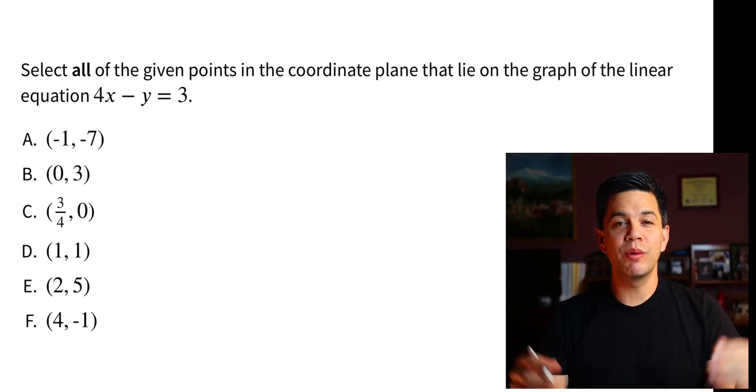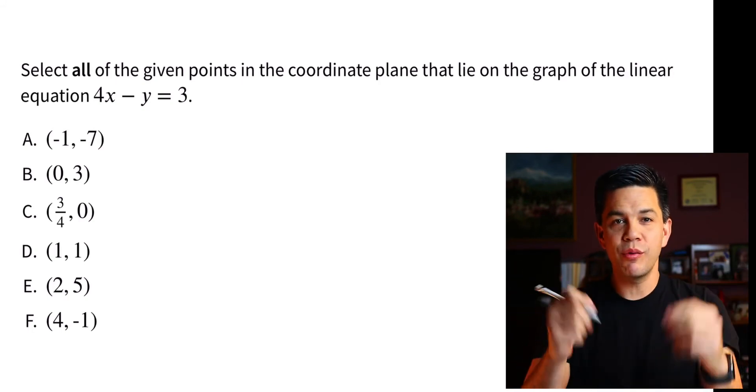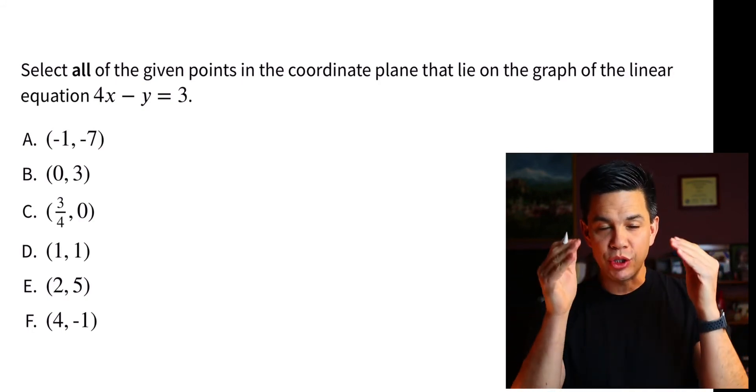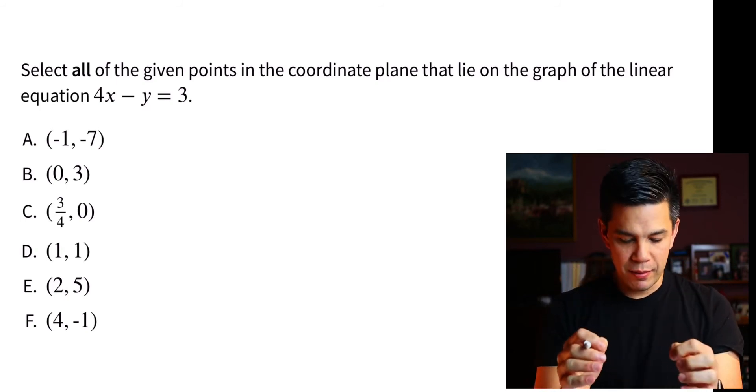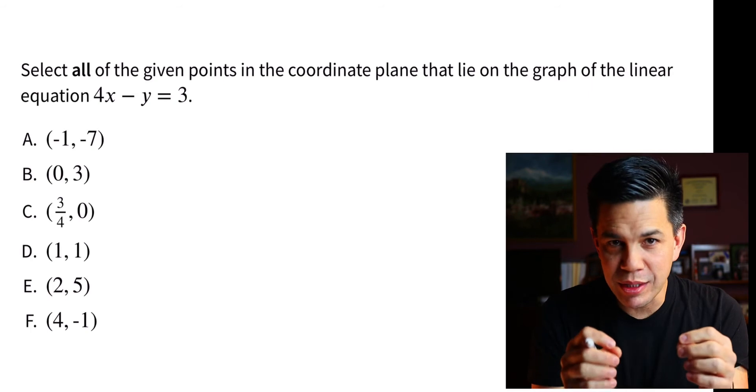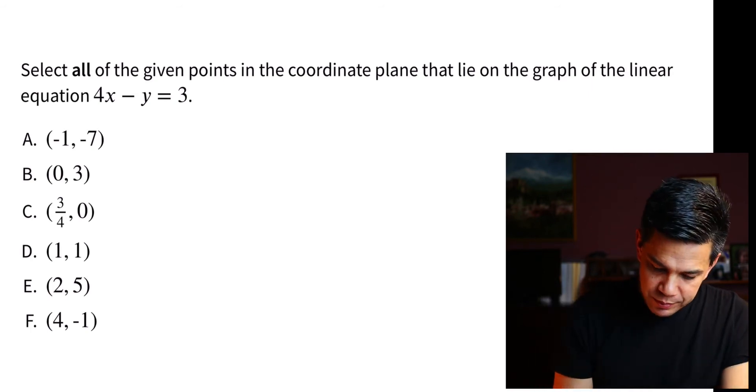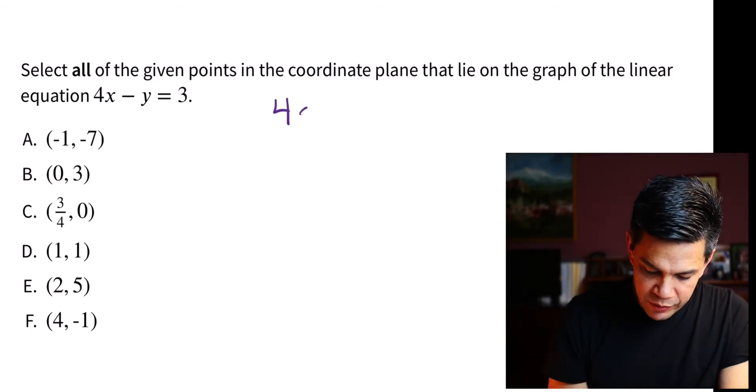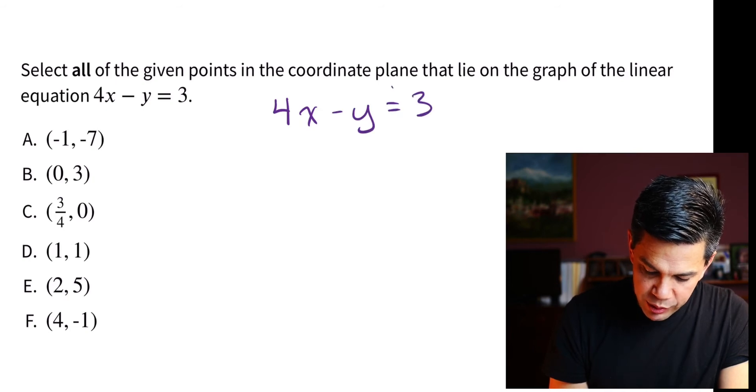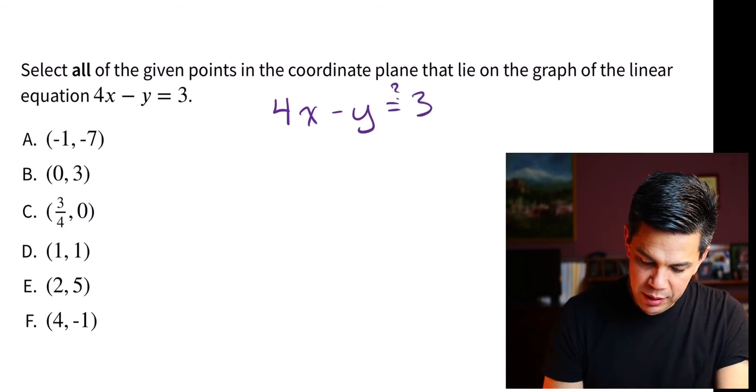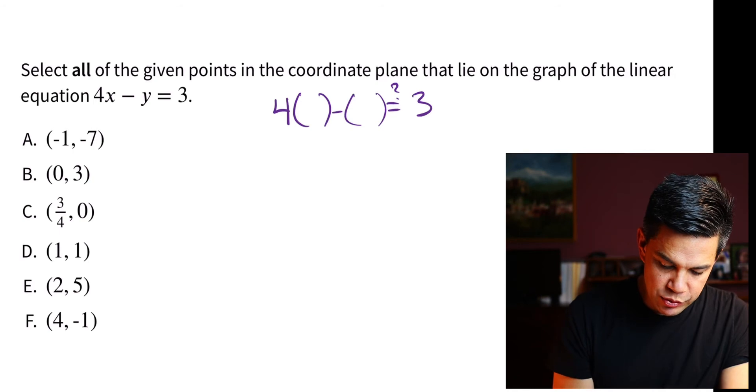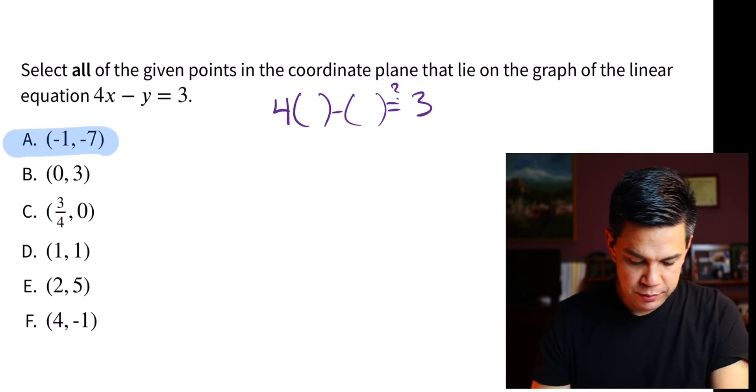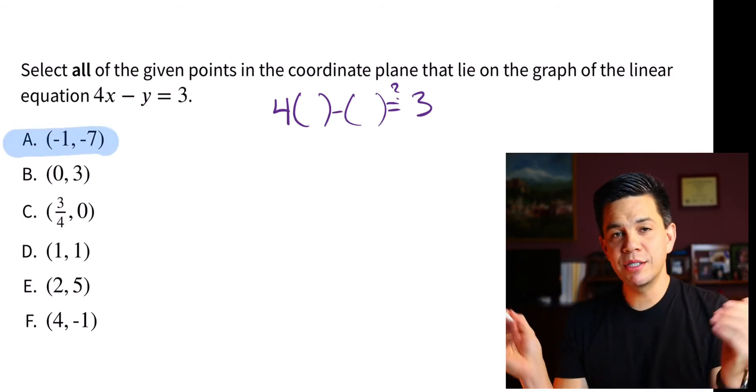We just have an x and a y value. We want to substitute those into the equation, see if it makes the equation true. And then we have a solution to our equation in two variables. We're going to start the same way. 4x minus y equals 3, question mark. Now, I'm going to get rid of the x and y, and I'm going to drop in some parentheses. From there, we're going to go to our options, and we're going to just drop those in, see which ones make this true.